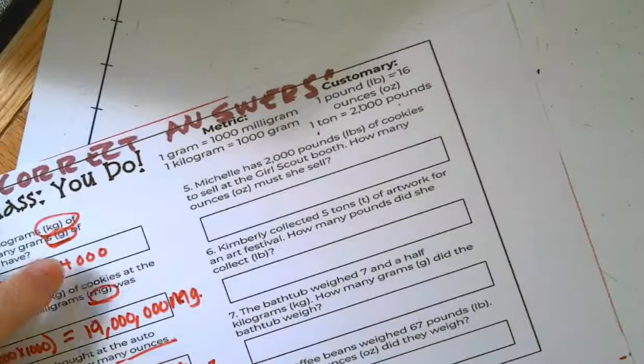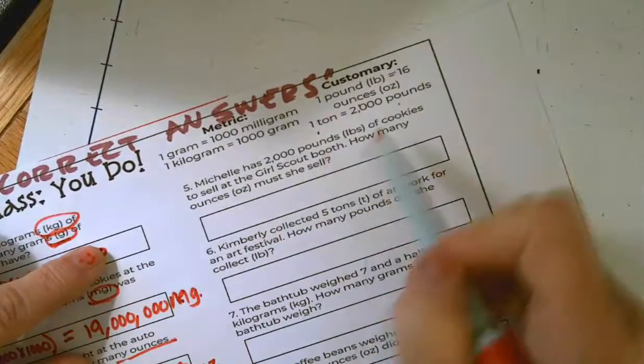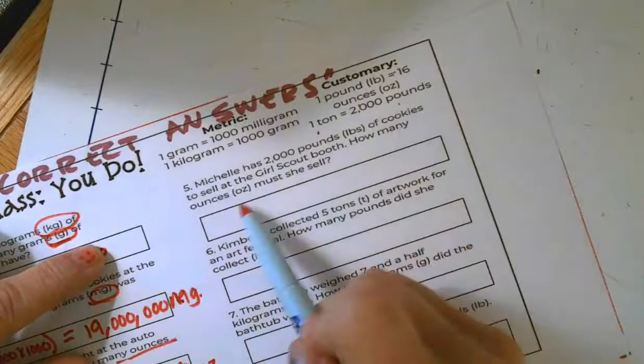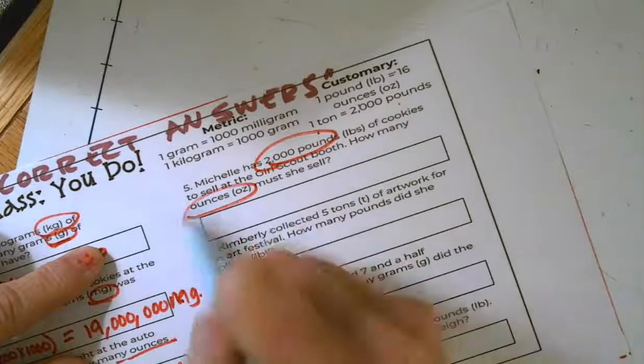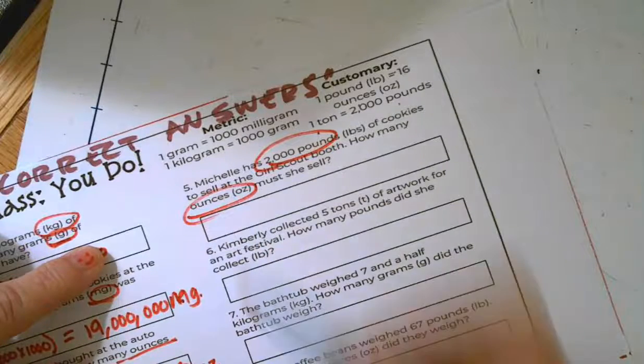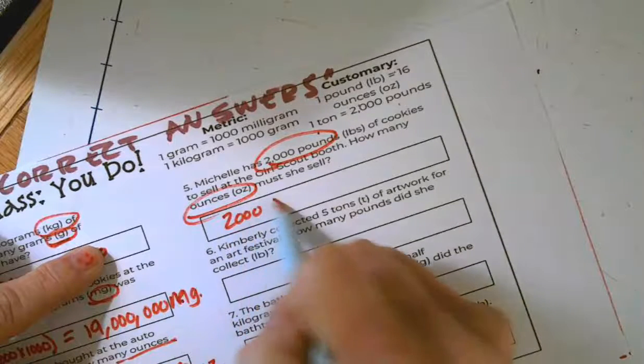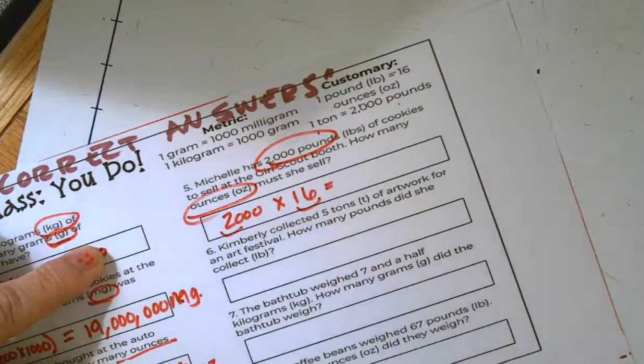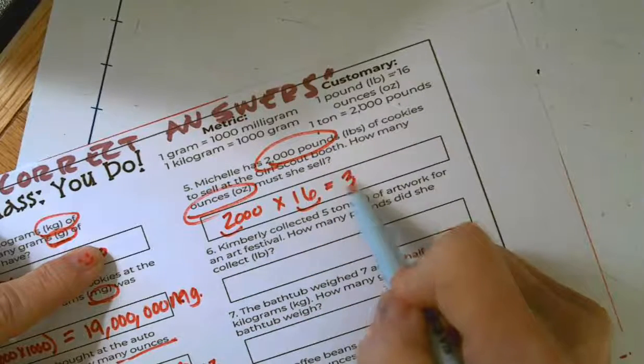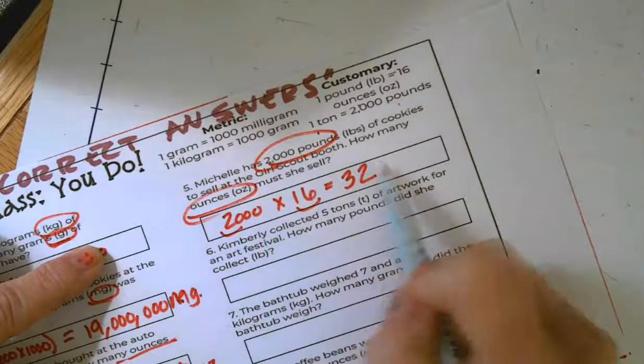All right. On number five, Michelle has 2,000 pounds of cookies to sell at the Girl Scout booth. How many ounces is that? I'm going from pounds to ounces. I know there are 16 ounces in a pound. So that's going to be 2,000 times the 16 ounces per pound. I know 2 times 16 is 32. And I'm going to annex my three zeros. That's 32,000 ounces.